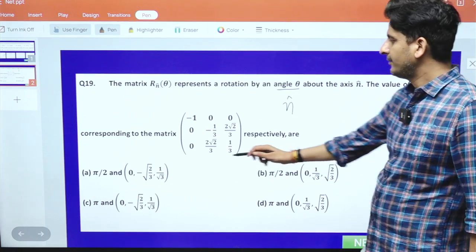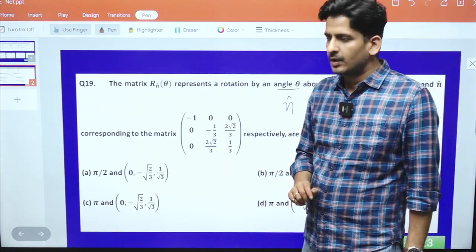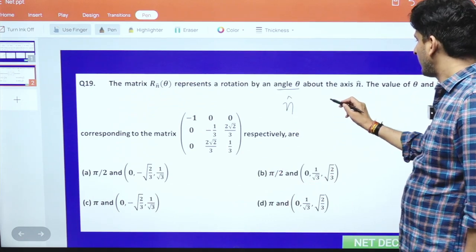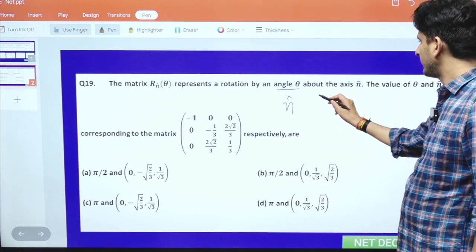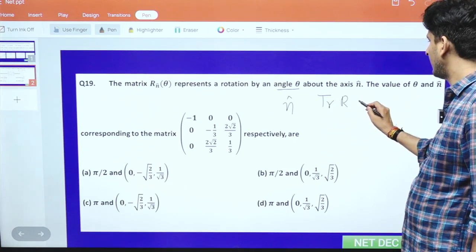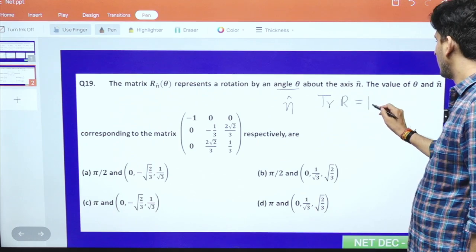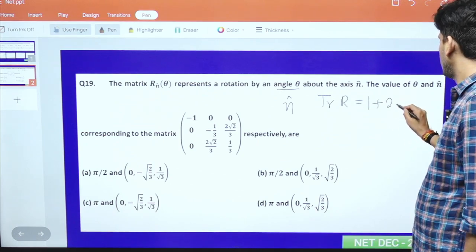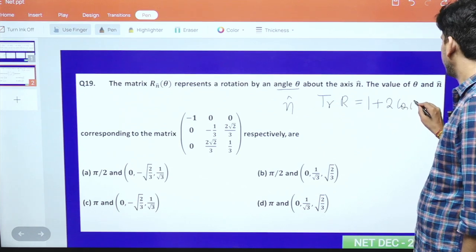We can use the property of a 3×3 rotation matrix that the trace of the rotation matrix R equals 1 plus 2 cos theta.